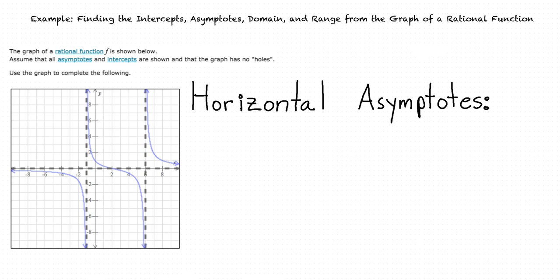Next, we're asked to find any horizontal asymptotes of the graph of the function f. We know that a line is a horizontal asymptote if the function values approach that line as x increases towards infinity or decreases towards negative infinity. We see in this example that as we move towards positive infinity along the x-axis, the graph of the function approaches the y value 0.